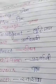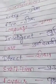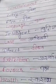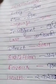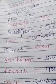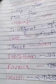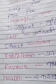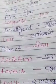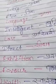Intelligent means buddhiman — the person who can think wisely, the person who can think well. Last means aakhri. Z is the last word. Z is the last letter of the English alphabet.